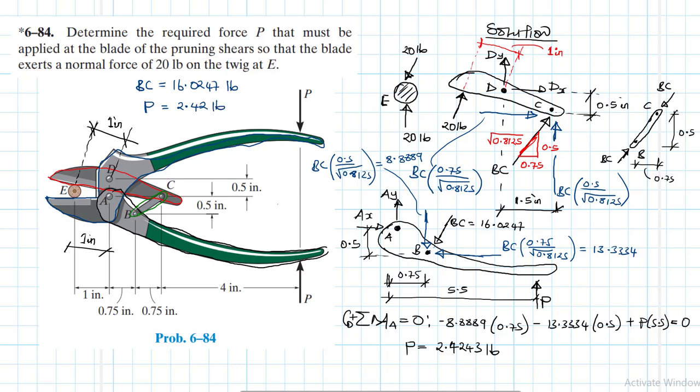We found the value of P = 2.42 pounds, and also BC = 16.0247 pounds. That is the force that must be applied at the blade of the pruning shears so that the blade exerts a normal force of 20 pounds on the twig at E. Thanks for watching — please share and subscribe, and see you in the next screencast.